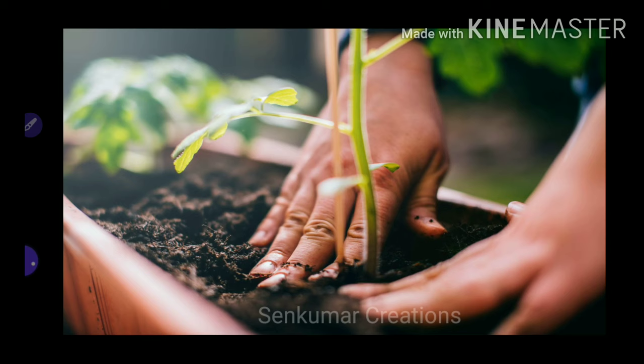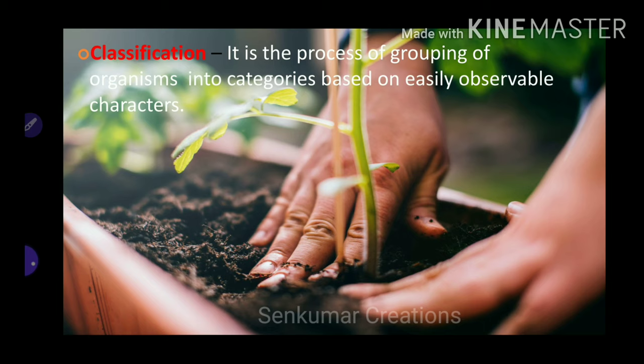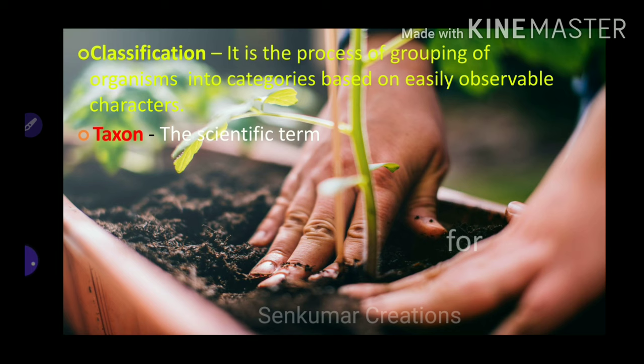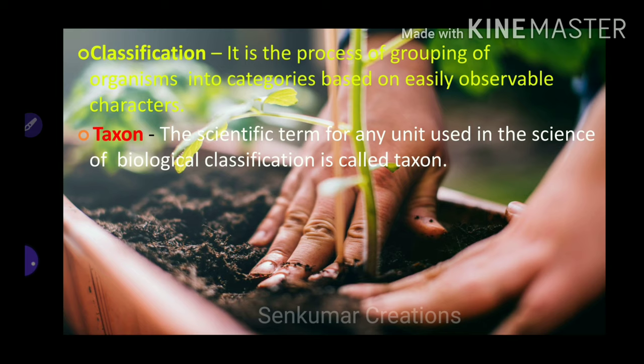Classification is the process of grouping organisms into categories based on easily observable characters. According to observable characters, organisms can be classified into different groups based on characteristic visible features.